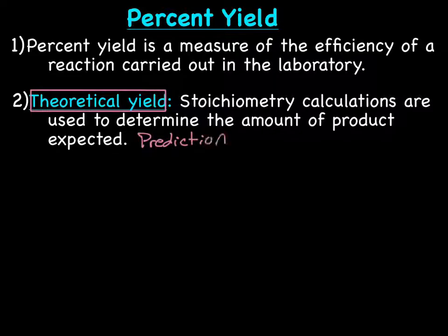And that's what we've been doing so far, right, just on a piece of paper. How much, if you have this much of a reactant, you solve, plug in some numbers and calculate how much product you should have in a perfect world. So if everything went exactly perfect, you would get the theoretical yield.